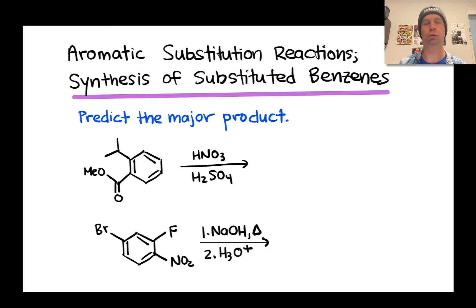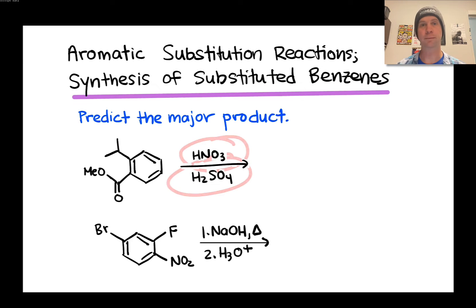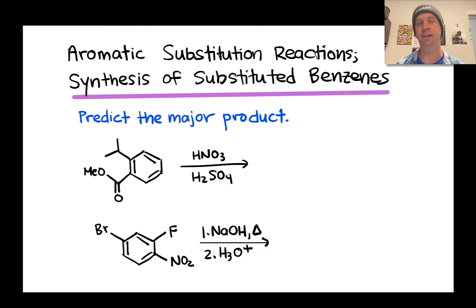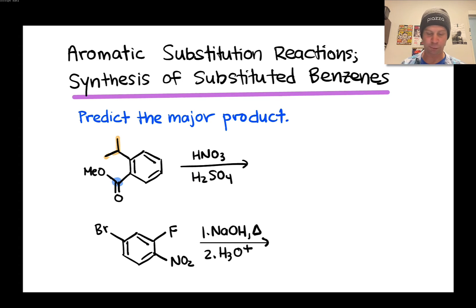The first question is to predict the major neutral organic product of each reaction. In the first case, nitric acid and sulfuric acid together produce the nitronium cation NO₂⁺, which is a fantastic electrophile, so we're looking at electrophilic aromatic substitution. The benzene substrate is already substituted with two groups: an isopropyl group and an ester group with a carbonyl connected to the benzene ring.